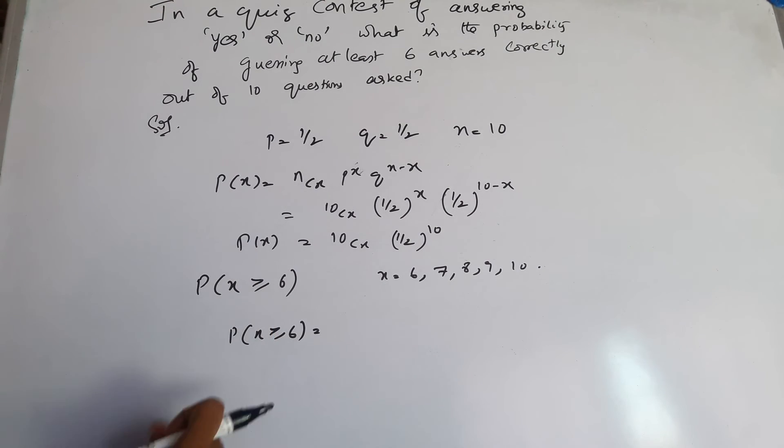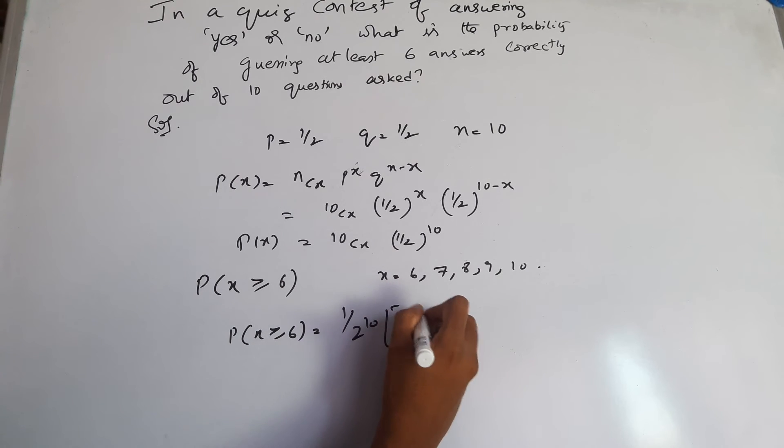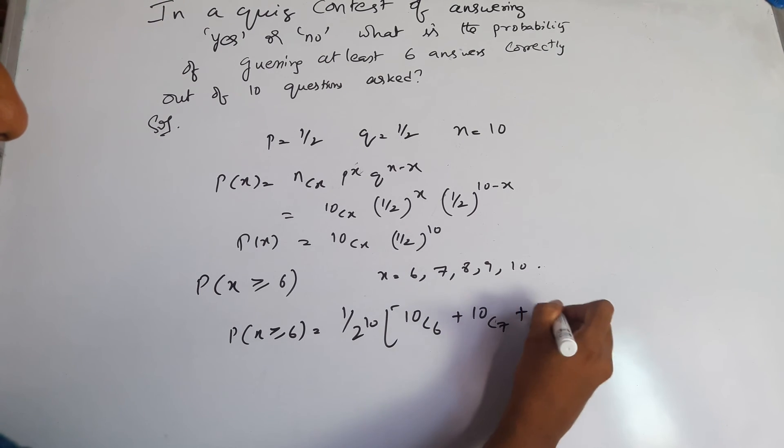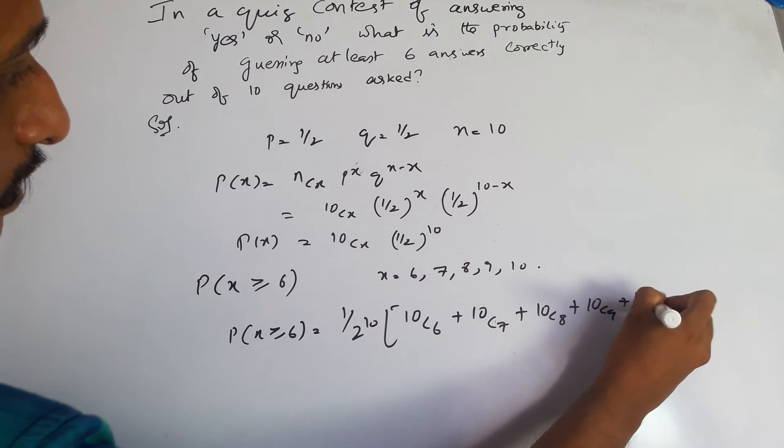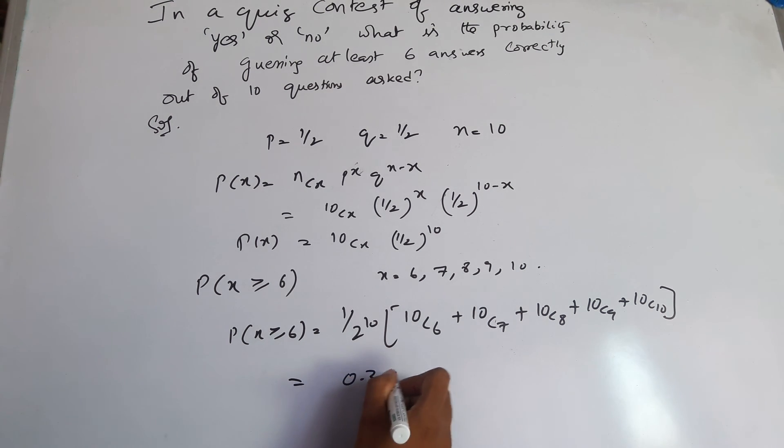The probability which we are supposed to find is one by two to the power of 10 times the sum of 10C6 plus 10C7 plus 10C8 plus 10C9 plus 10C10. If we simplify it, we get 0.377.